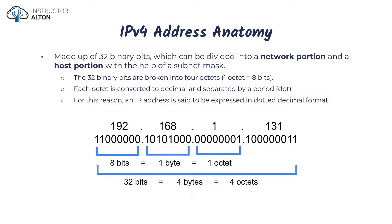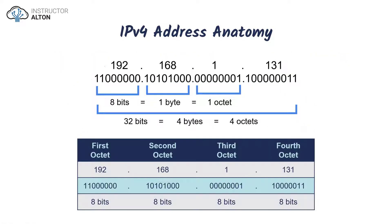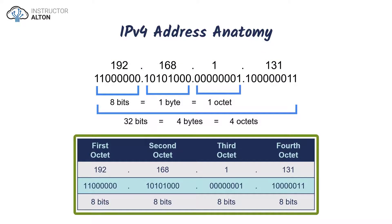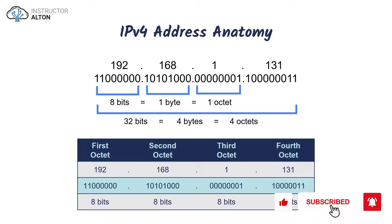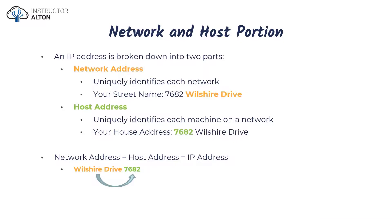Don't worry about the binary portion — we're going to walk through the conversion from decimal to binary and back from binary to decimal later in the course. On screen I've broken out the address 192.168.1.131 into its different octets, from the first octet to the fourth, showing the decimal number, the binary number, and how many bits there are for each octet. You'll become very familiar with these formats as we progress.